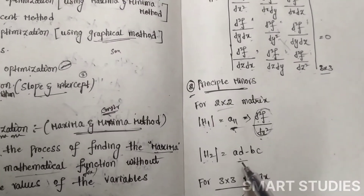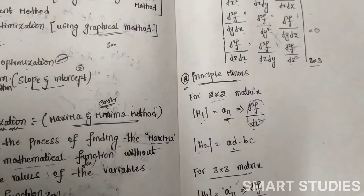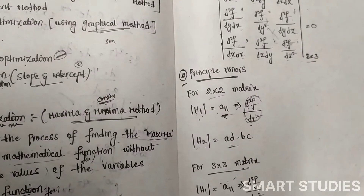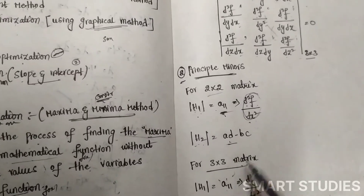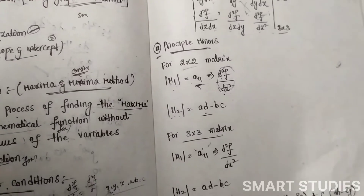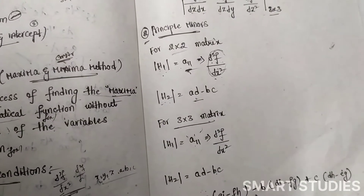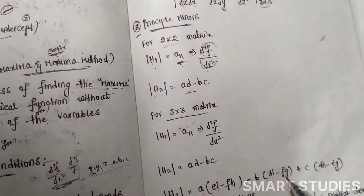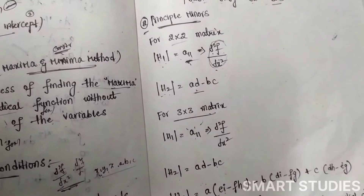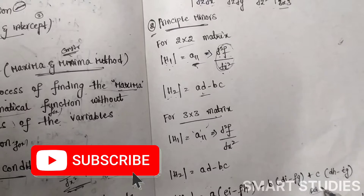For a 3×3 matrix, we find three principal minors: |H1| same as before, |H2| same as ad minus bc, and |H3| is the full determinant: a(ei − fh) − b(di − fg) + c(dh − eg). This gives the determinant value of the 3×3 matrix needed to find the third principal minor.